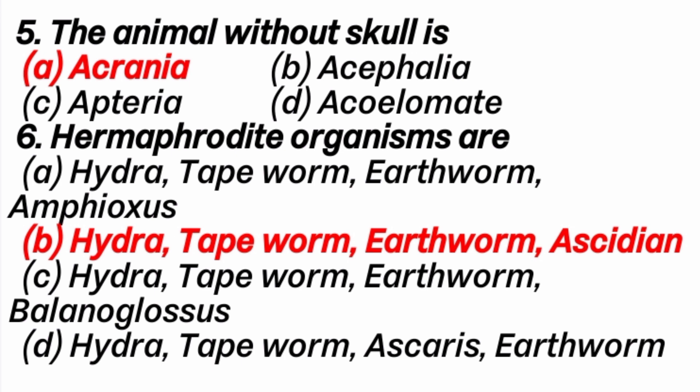Fifth question: the animal without a skull — answer is A option, Amphioxus. Sixth question: hermaphrodite organisms are — answer is B option: Hydra, tapeworm, earthworm, and Ascidia. Hermaphrodite organisms mean the organisms which have both male and female reproductive organs present in the same organism.